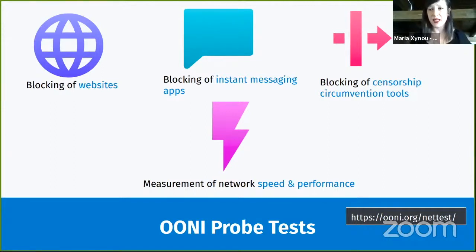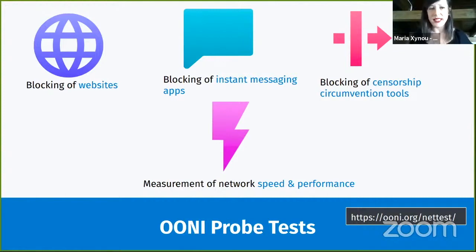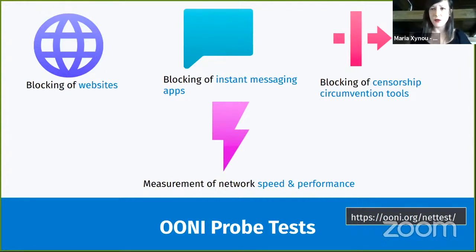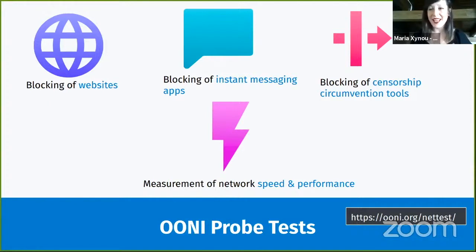The 'how' part of blocking can be interesting because depending on how the block is implemented, that information can potentially be useful for circumvention. Speaking of circumvention tools, we commonly see around the world that when popular platforms like social media are blocked, circumvention tools such as popular VPNs are also blocked — seemingly as an attempt to prevent people from circumventing censorship. That raises the question: which VPNs work and which are blocked? That is why we also have tests for measuring whether specific circumvention tools are blocked — currently for Tor, Psiphon, and RiseupVPN.